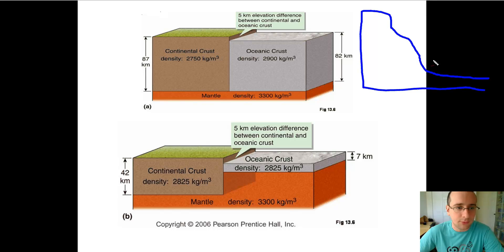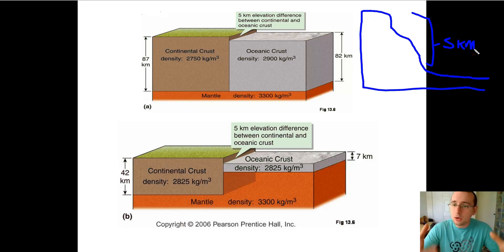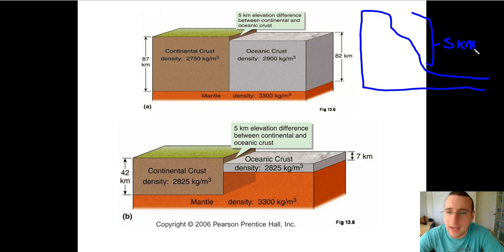When you look at the globe, the continental crust is very thick and then you get to the ocean which has very thin crust. That five kilometer difference in thickness on average between the oceanic crust and continental crust could be attributed simply to the fact that oceanic crust is denser. But that's not exactly what happens.